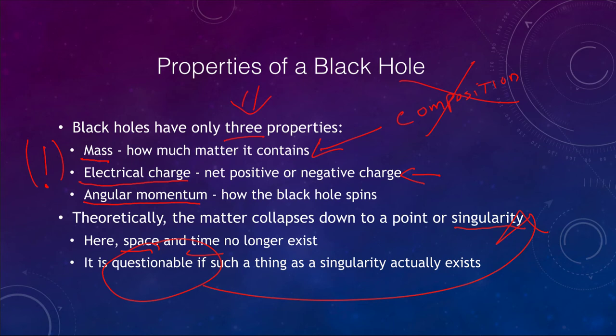Within a black hole, if you get down to a singularity, things like space and time have no meaning anymore. Space and time can get so twisted that it is not what we would normally be used to. We are used to traveling through time in one direction at one speed — but within a black hole you could actually travel through time, however you would then be confined to travel in only one direction: towards the potential singularity at the center. So perhaps it is a way to travel through time, but since you can't get back out, it doesn't do any good.